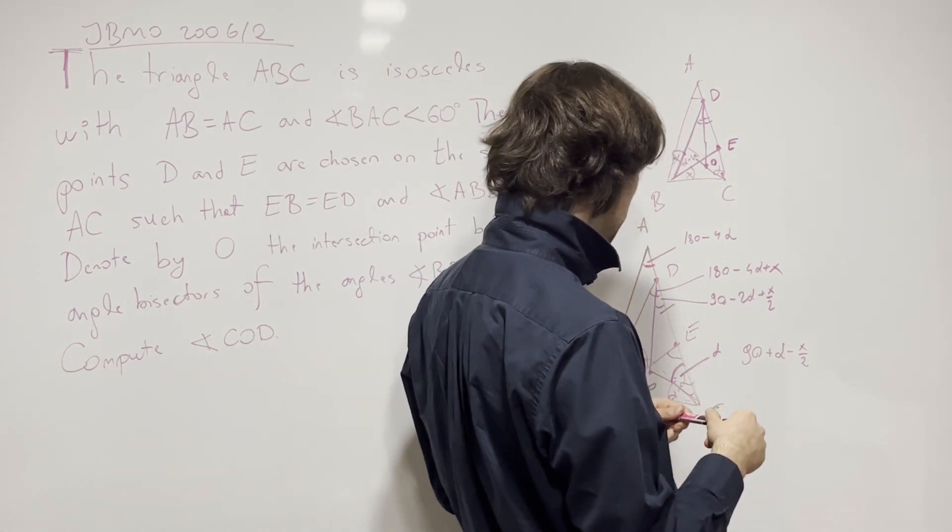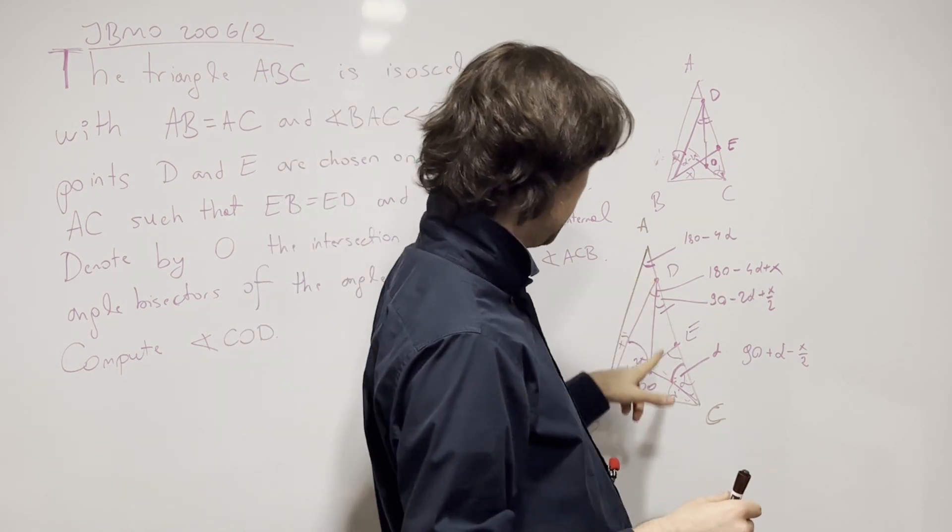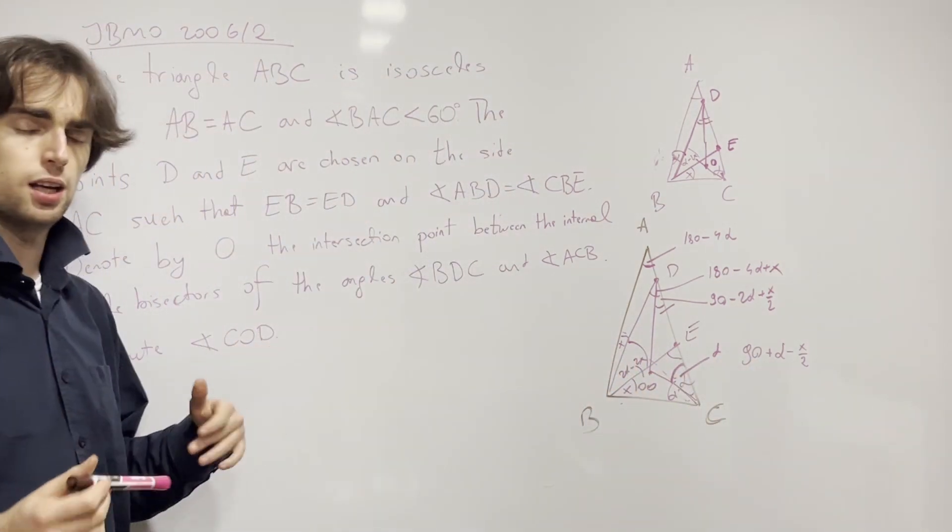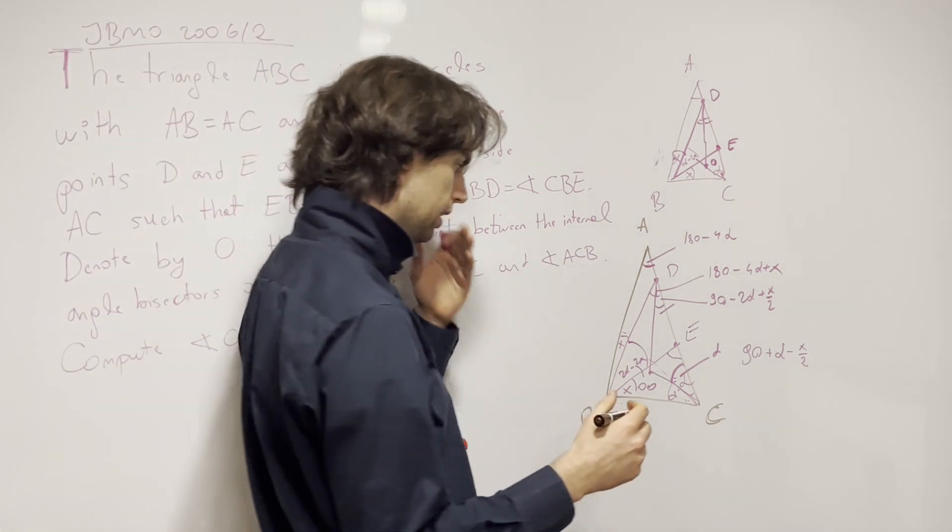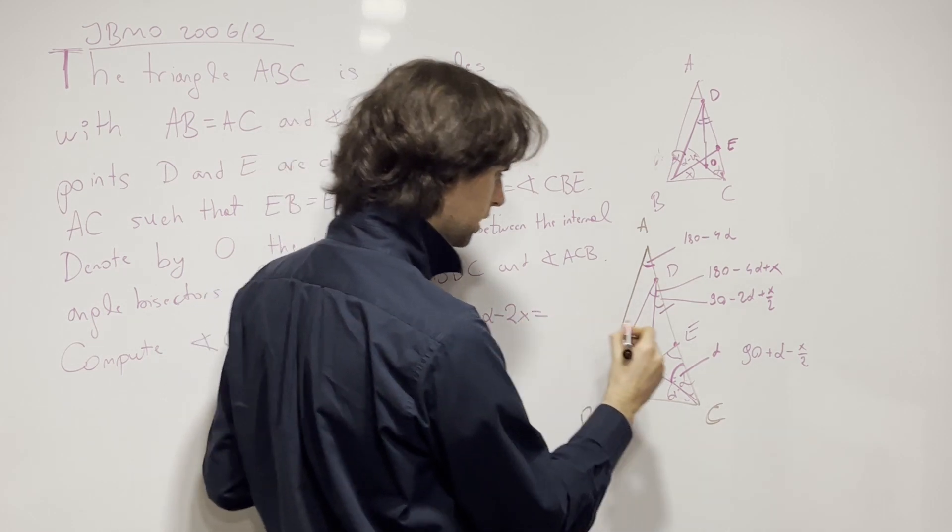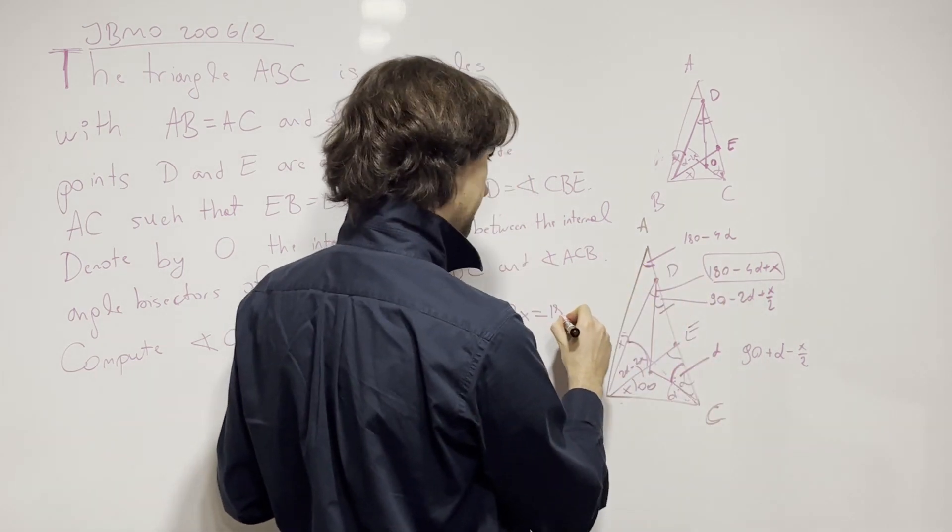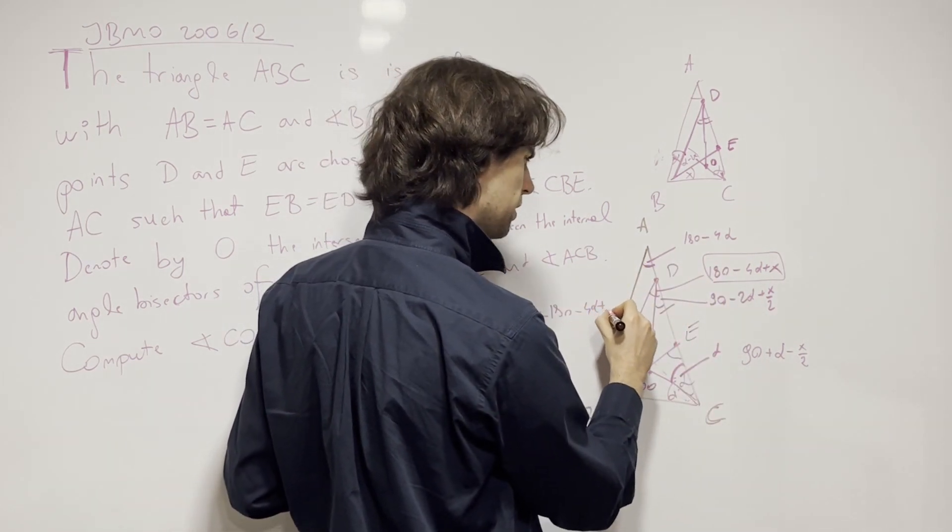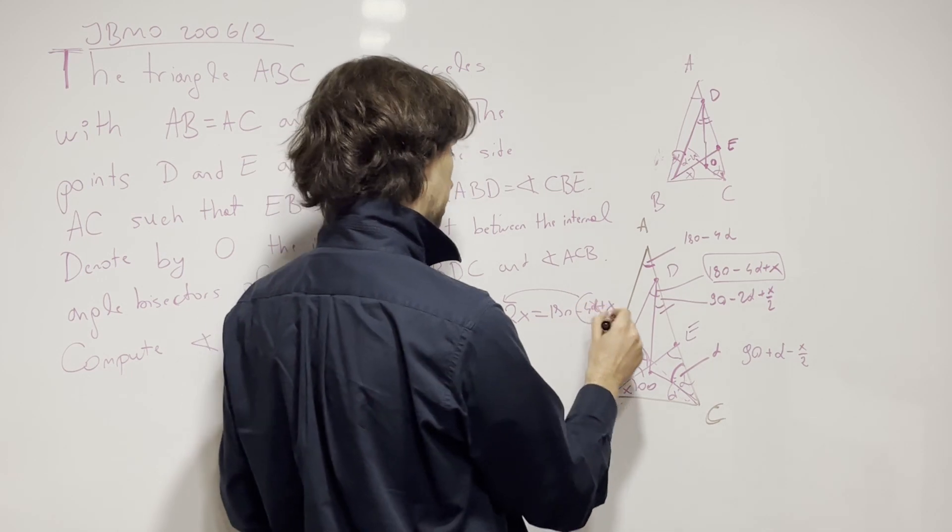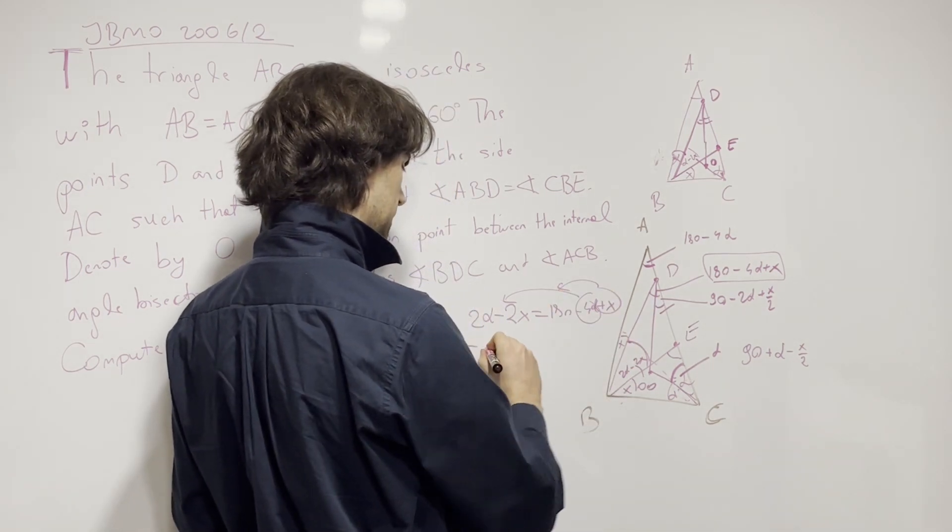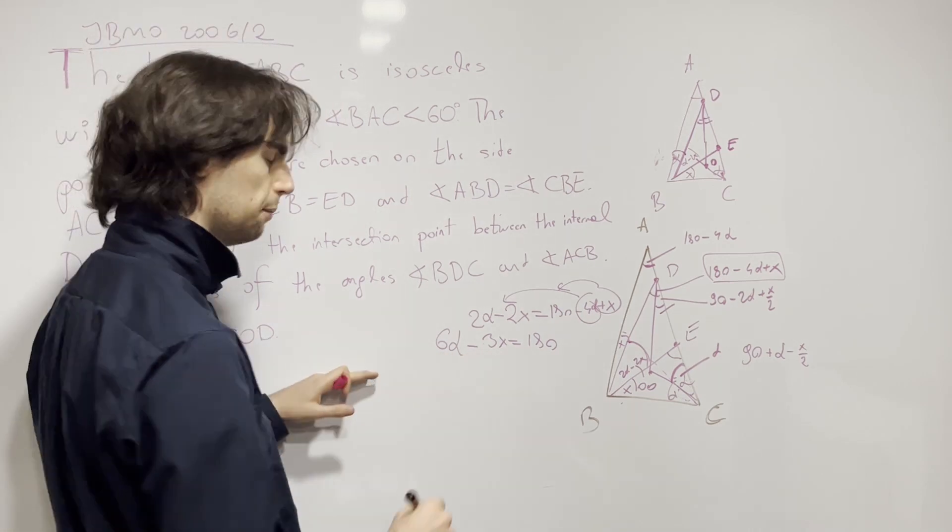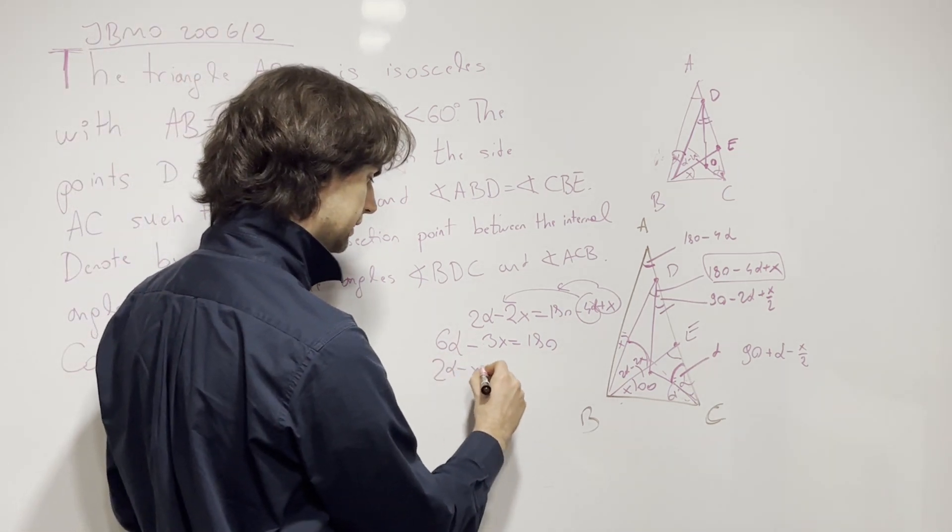But we also have, wait a second. We haven't used the fact that ED equals EB, which we also need to use. It's very rare when you have to compute something, you usually have to compute what it's actually equal to. And here, we're going to have this angle 2 alpha minus 2X needs to equal this angle, which is 180 minus 4 alpha plus X. So this gives us 6 alpha minus 3X equals 180.